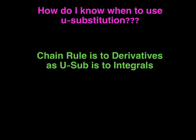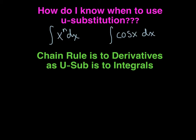The big question is: how do I know when to use it? At this stage in your integration career, you've learned how to integrate using the power rule — for instance, finding the antiderivative of x to the nth power with respect to x. You've probably also integrated the basic trig functions, like the antiderivative of cosine. So now you're ready to take a big leap. Here's how we're going to summarize it: chain rule is to derivatives as u-sub is to integrals.